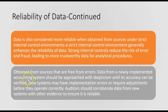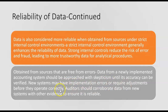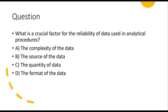Data is also considered more reliable when it is free from error. Data from a newly implemented accounting system, for example, should be approached with skepticism until its accuracy can be verified. New systems may have implementation errors or require adjustments before they operate correctly. Auditors should corroborate data from new systems with other evidence to ensure it's reliable.